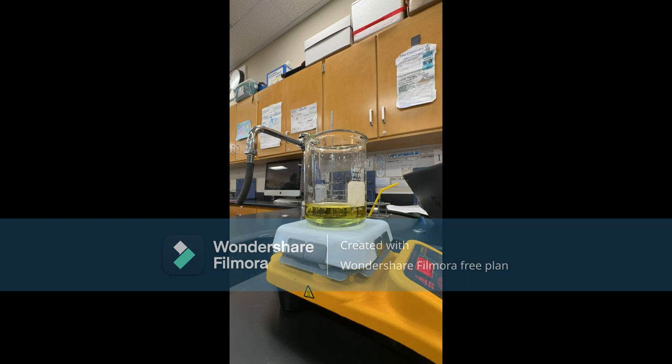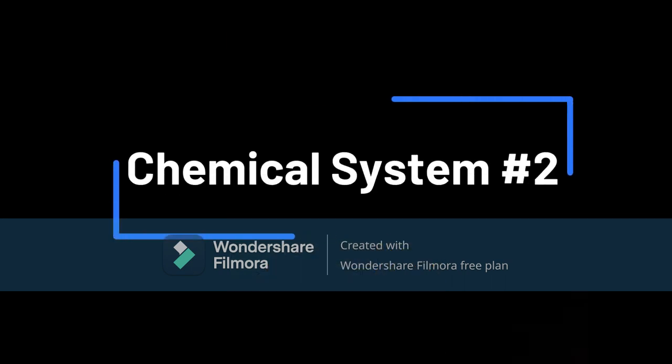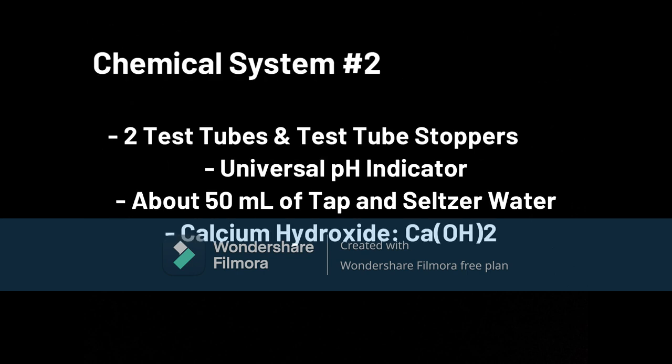As you can see, the liquid has a slightly different color than from the preheated solution. Now, for chemical system number two. This system includes two test tubes, two test tube stoppers, and universal pH indicator, and about 50 milliliters of tap and seltzer water.